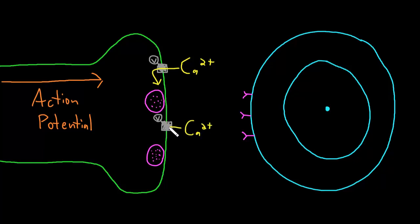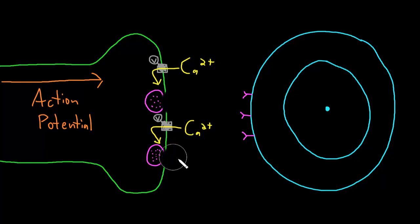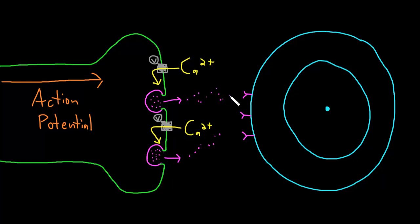Let me draw a couple of these — though there are lots of them, of course. The increased concentration of calcium inside the axon terminal causes changes to proteins on the synaptic vesicles and proteins on the presynaptic membrane, causing them to interact and fuse. The inside of the synaptic vesicle is now in communication with the synaptic cleft, and by diffusion, the neurotransmitter molecules exit the axon terminal and flow out into the synaptic cleft.